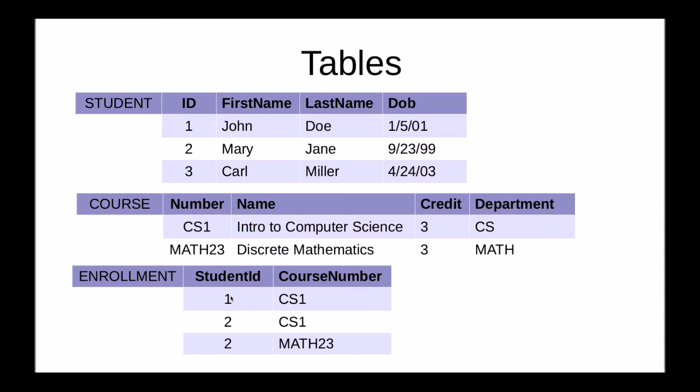So as you can see, student 1 and 2 take the course CS1, but student 2 also takes the course MATH23. So this shows you an N-to-M relationship. Student ID is used multiple times, the course number can be used multiple times. This would not be possible if we had the foreign key directly on the course table, because then we could only have a single student taking that course.